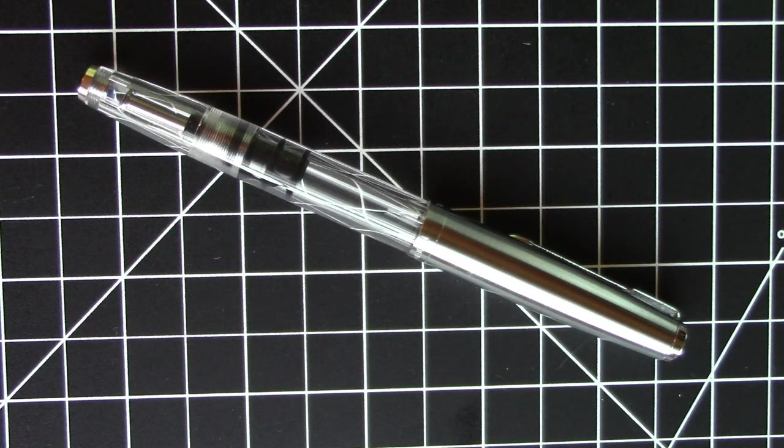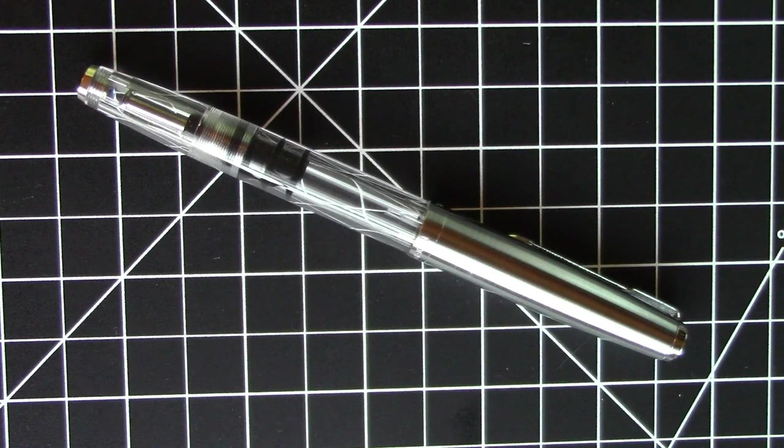Greetings, pen pals. We have here a variant on a variant. This is a Wingsong 601A. It's a variant on an earlier version of the 601A that came out, which is in itself a variant on the 601, which came out a couple of years ago, which is in itself a sort of homage slash knockoff of a Parker Vacumatic.